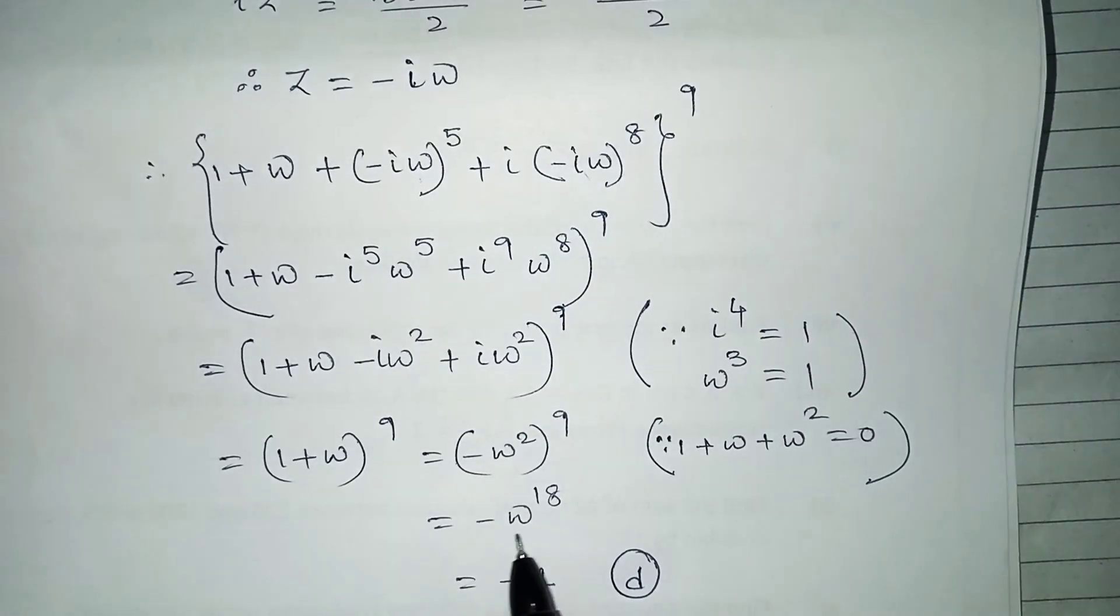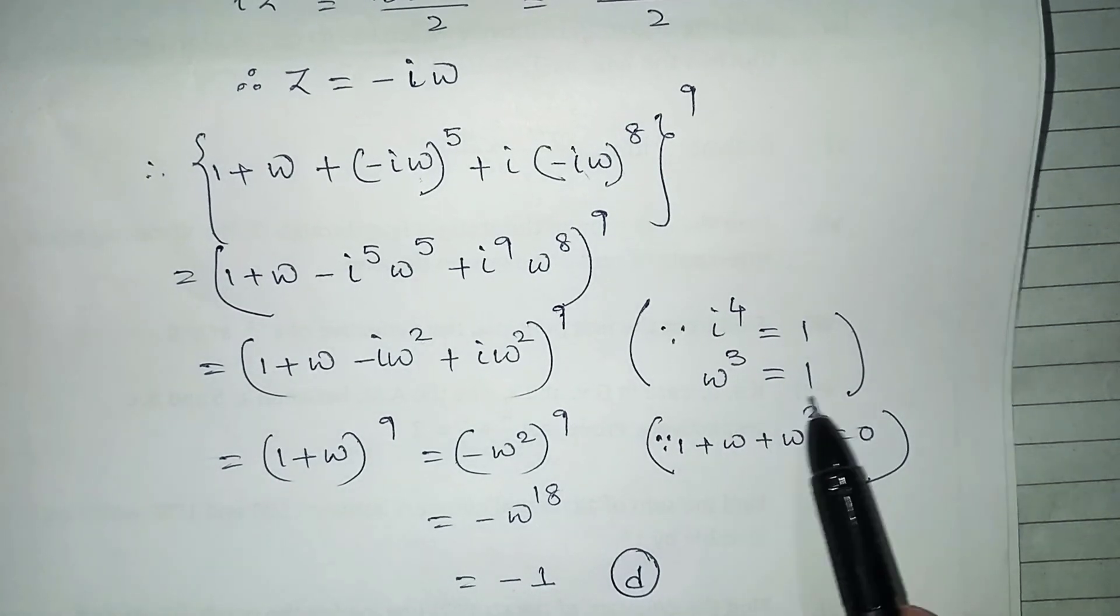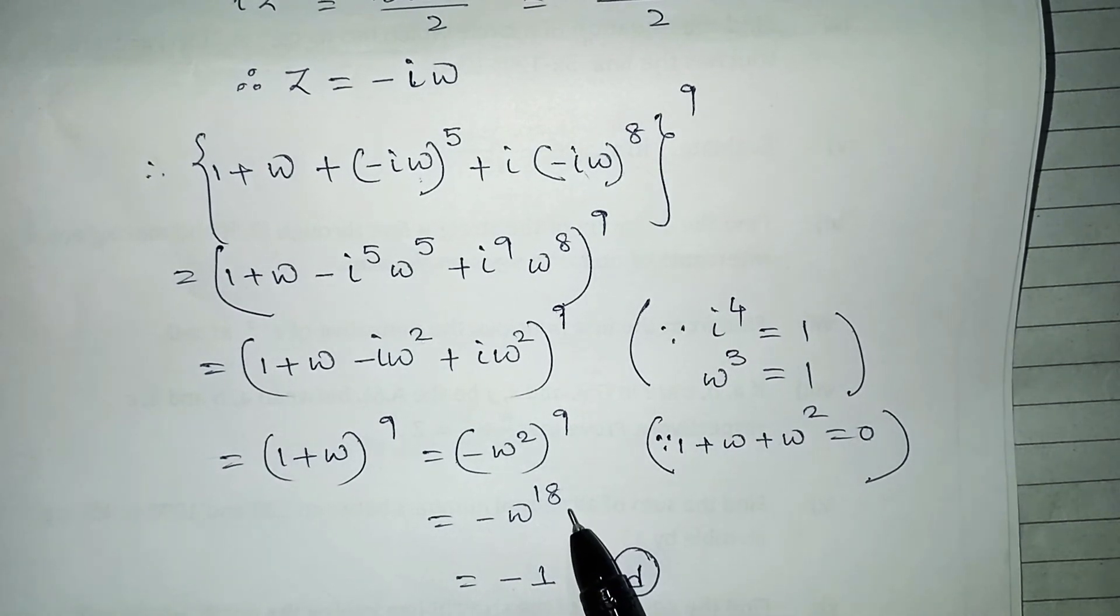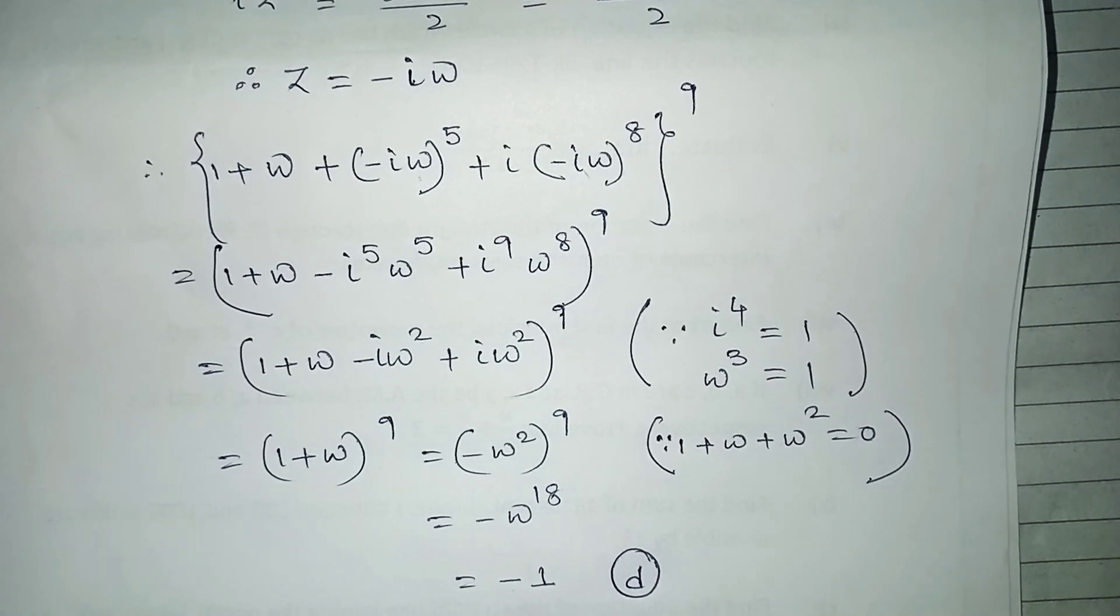So that's why one plus omega is minus omega square, whole to the power nine. It means minus omega to the power eighteen. And because omega cube is one, so eighteen is a multiple of three. So that's why minus one. So option D is correct.